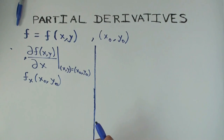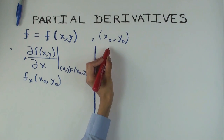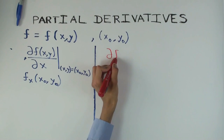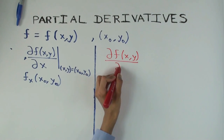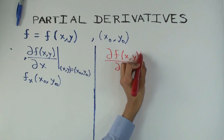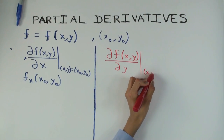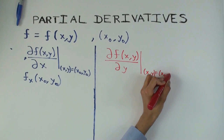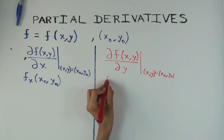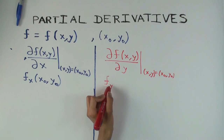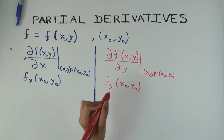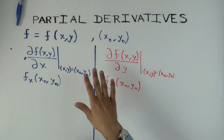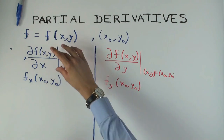Now what is the notation for the derivative with respect to y? We have to use a different symbol. The only difference is you have dy here instead of dx. Again, you have to specify the point. This can also be written as f sub y of x-naught comma y-naught. So these are the two derivatives we need to define, and now I want to actually define what they mean.